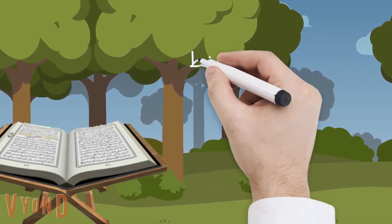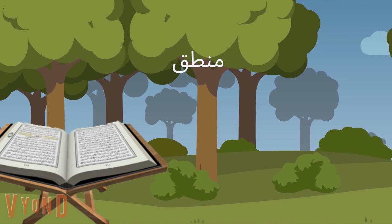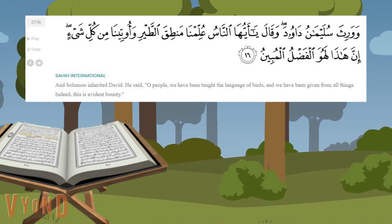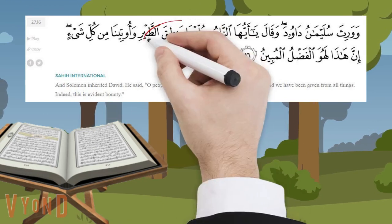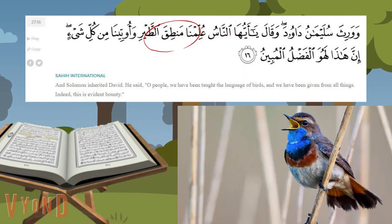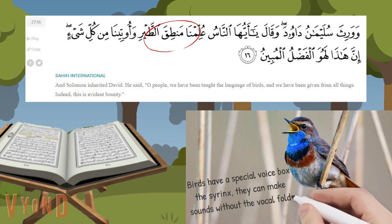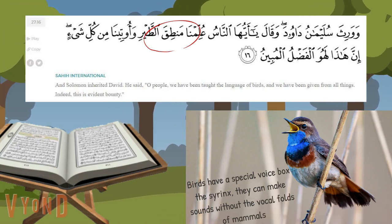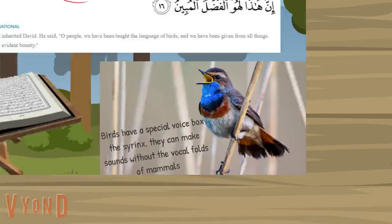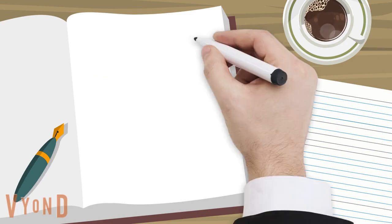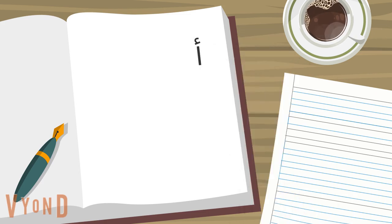Like Mantiq At-Tayr: 'And Solomon inherited David. He said, O people, we have been taught the language of birds, and we have been given from all things. Indeed, this is evident bounty.' The difference in the number of letters is due to the first letter, Alif, which is really two and a half sounds.